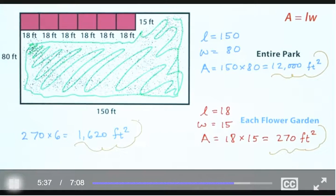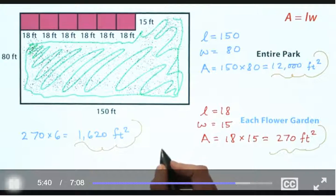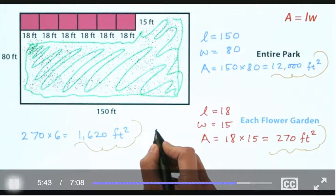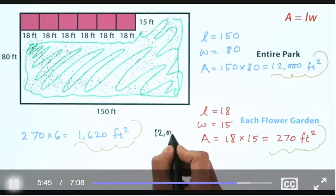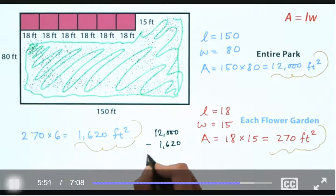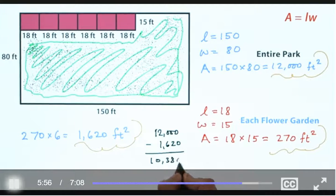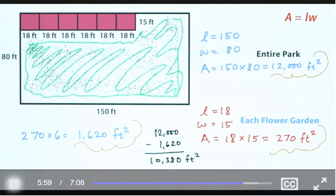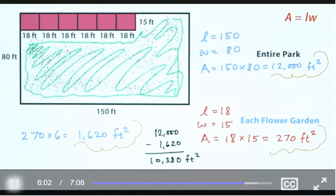And so if we now subtract, we take the area of the entire park, which we saw was 12,000. And we subtract off 1,620, which is this area right here. Then that difference, which is 10,380 feet squared, represents the area of the green. So the area of the green, or the area of the park that's not used for the flower gardens, is 10,380 square feet.